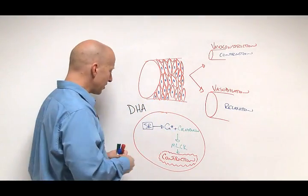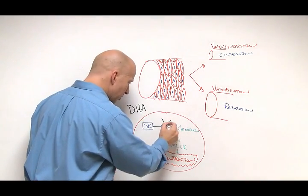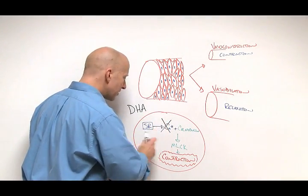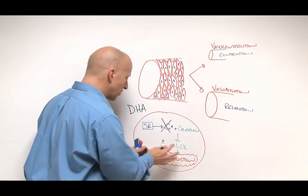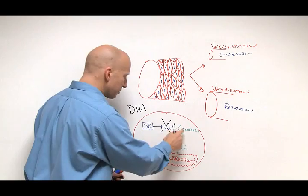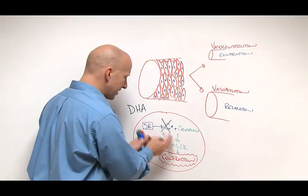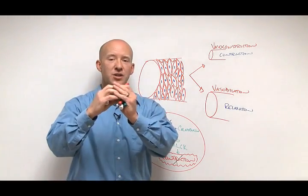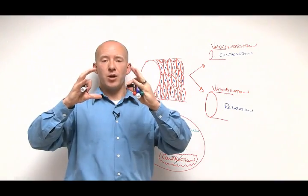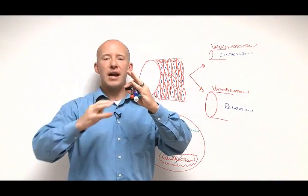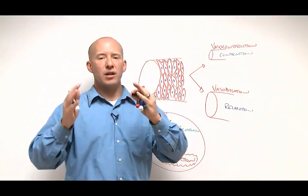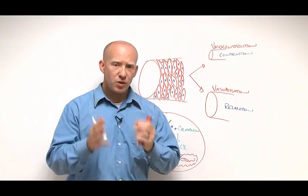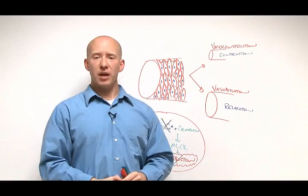Here's how DHA has been found to be beneficial. DHA has actually been shown to decrease the amount of calcium that's released inside the smooth muscle. Less calcium means less binding. Less binding means less activity, and ultimately, less contraction. Less contraction of smooth muscle around your artery means a larger artery, a larger diameter, easier blood flow, and lower blood pressure.